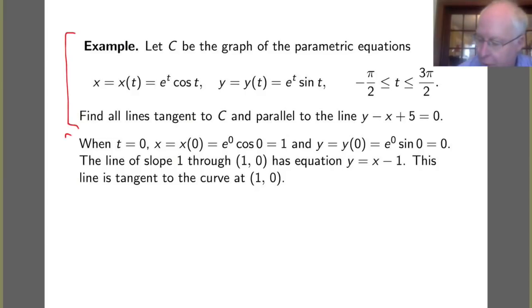When t is 0, the x coordinate is x(0), which is e^0 cos 0 = 1. And the y coordinate is y(0), e^0 sin 0 = 0. So the line of slope 1 through the point (1, 0) has equation y = x - 1. This is one of the lines tangent to the curve C at the point (1, 0).